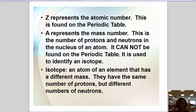Z is going to represent atomic number. We find this on the periodic table. A represents what we call the mass number. This is the number of protons plus neutrons in the nucleus of an atom. It's got to be a whole number because we're counting protons and neutrons.